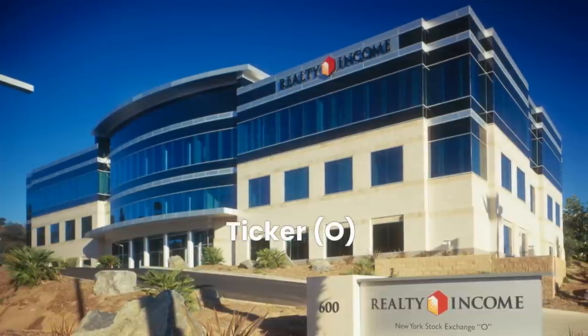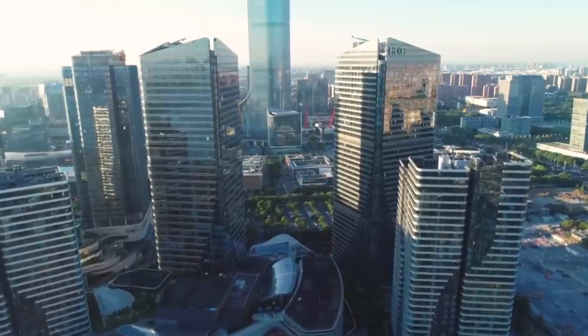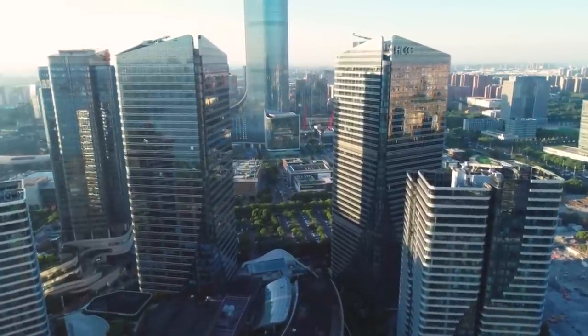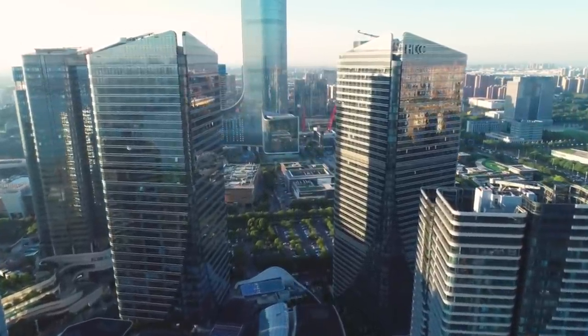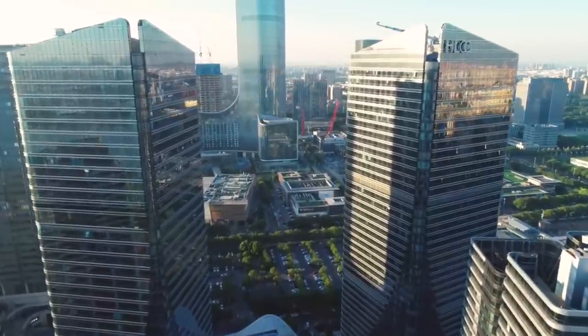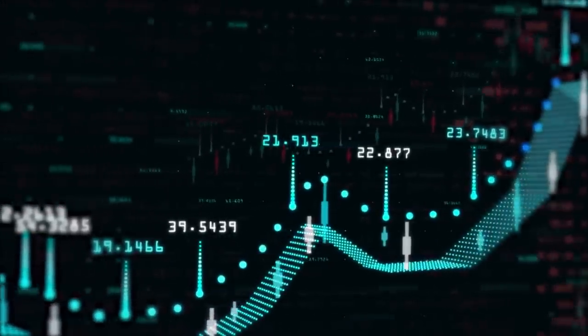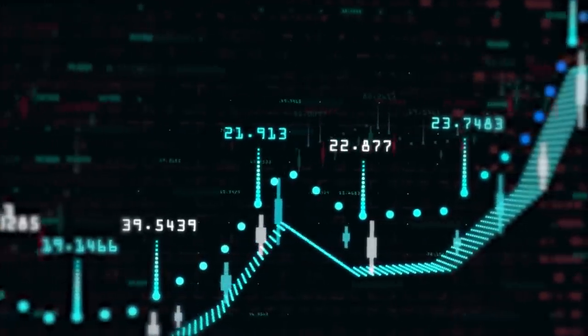Number 23. Realty Income, ticker O. Since its start in 1969, Realty Income has invested in thousands of commercial properties in the US, UK, and Spain. Most of these properties are rented by a single tenant. For the fiscal quarter ending June 30, 2022, Realty Income's total assets were valued at $44.95 billion.